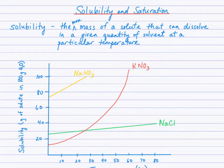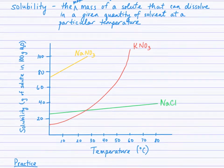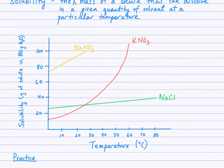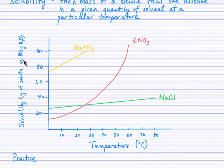You'll see in the solubility curve below that the y-axis is labeled solubility — grams of solute in 100 grams of water — and the x-axis is labeled temperature, so at a particular temperature. All components of the definition are contained in this solubility curve.